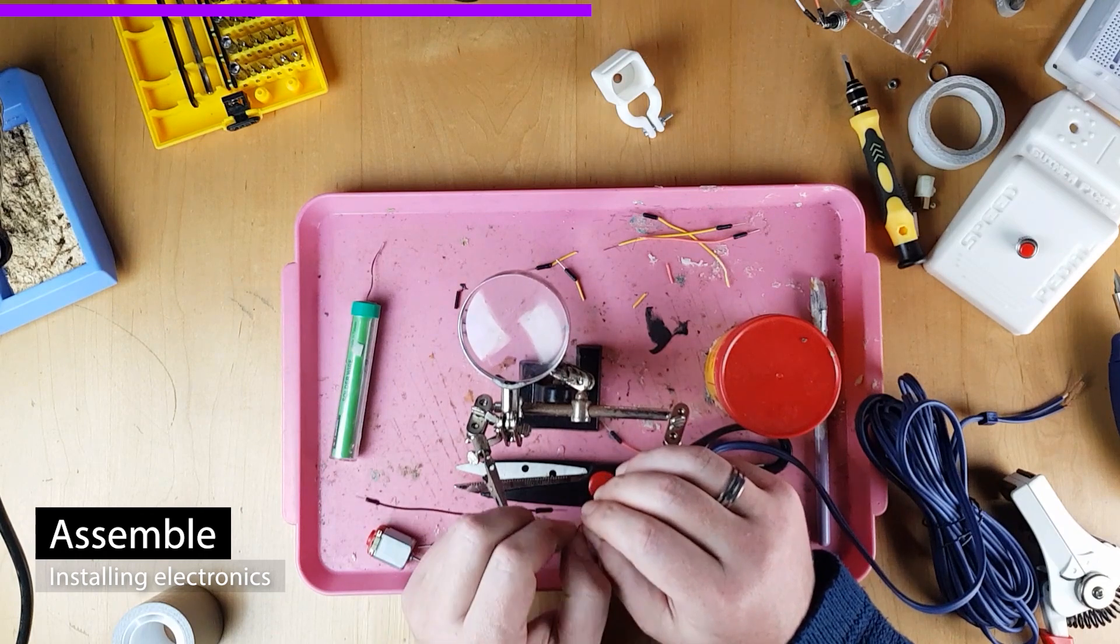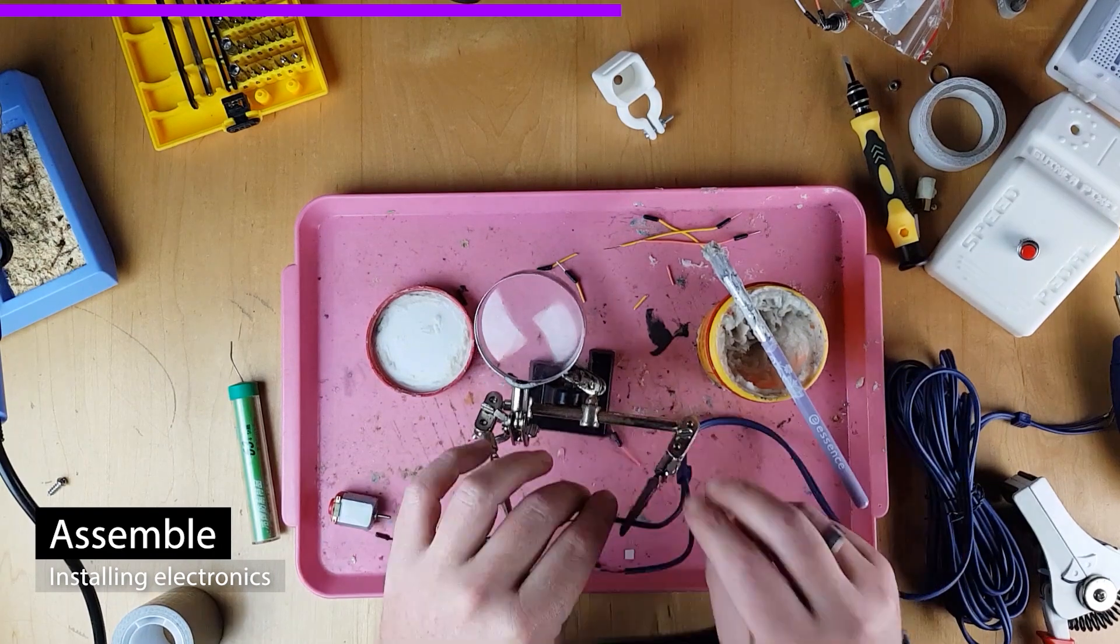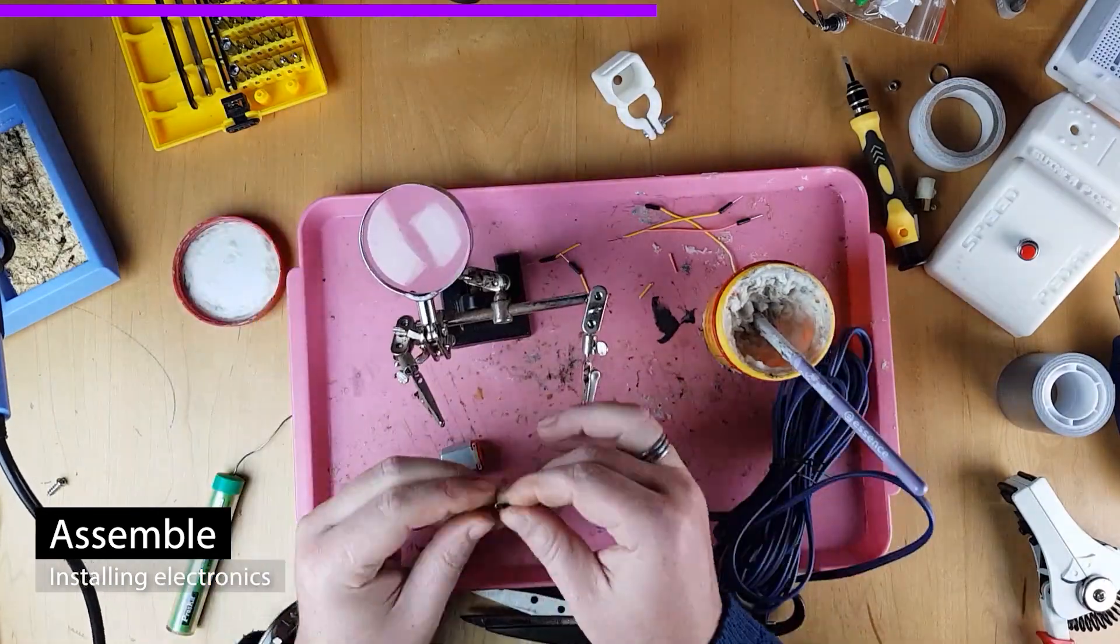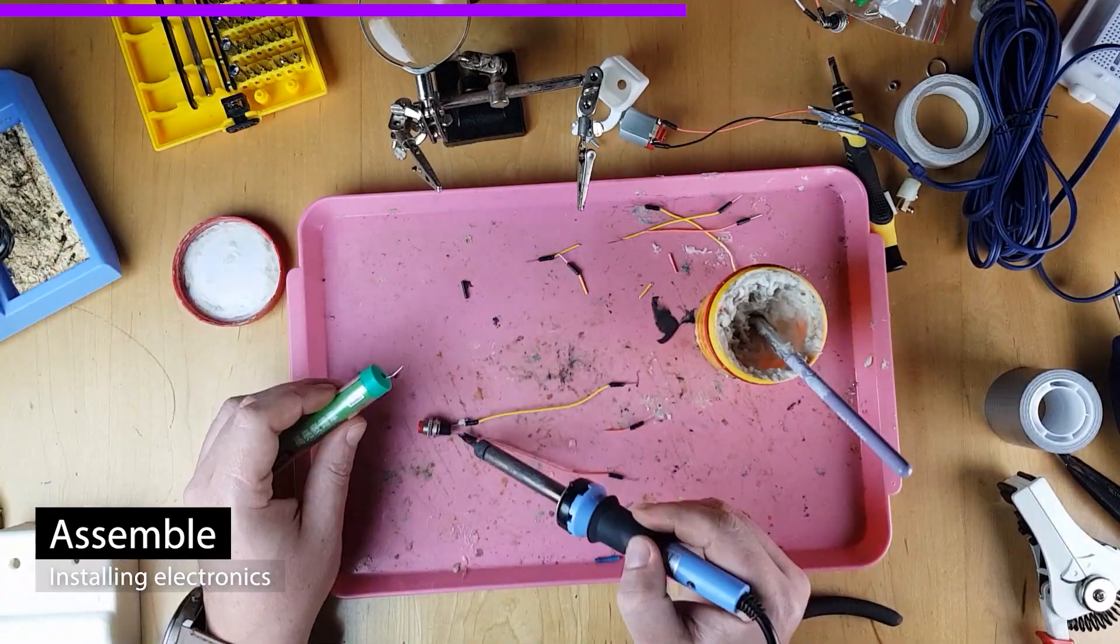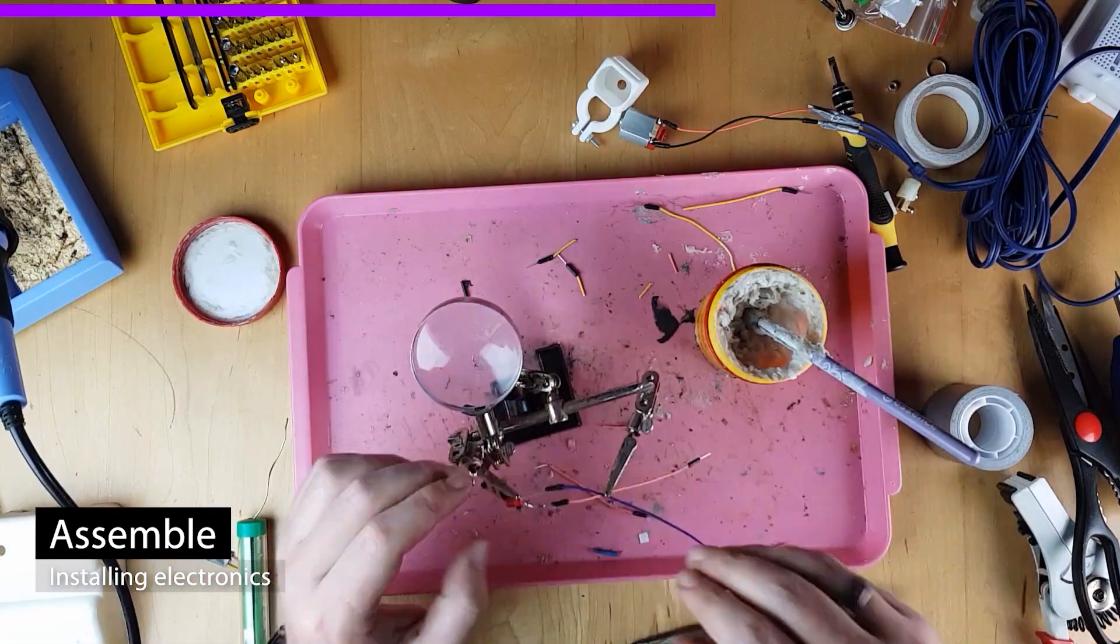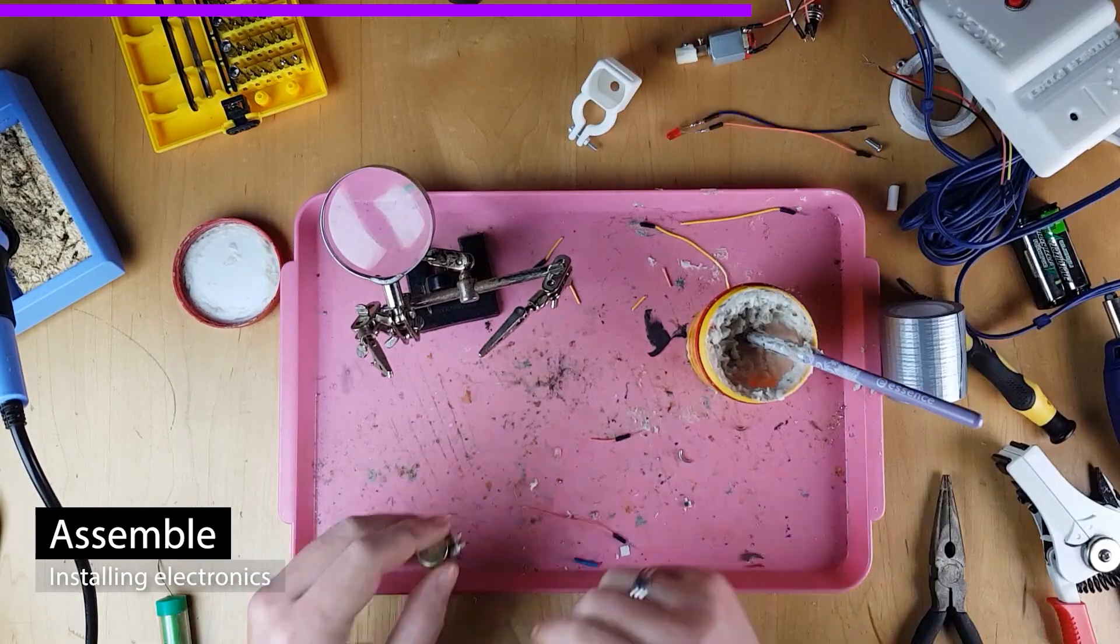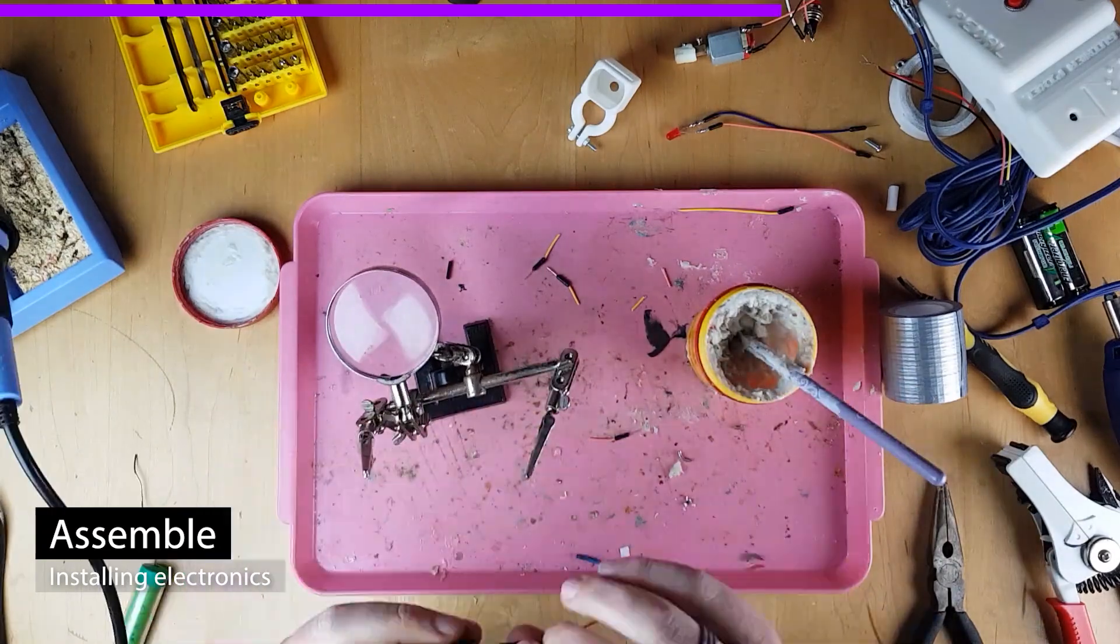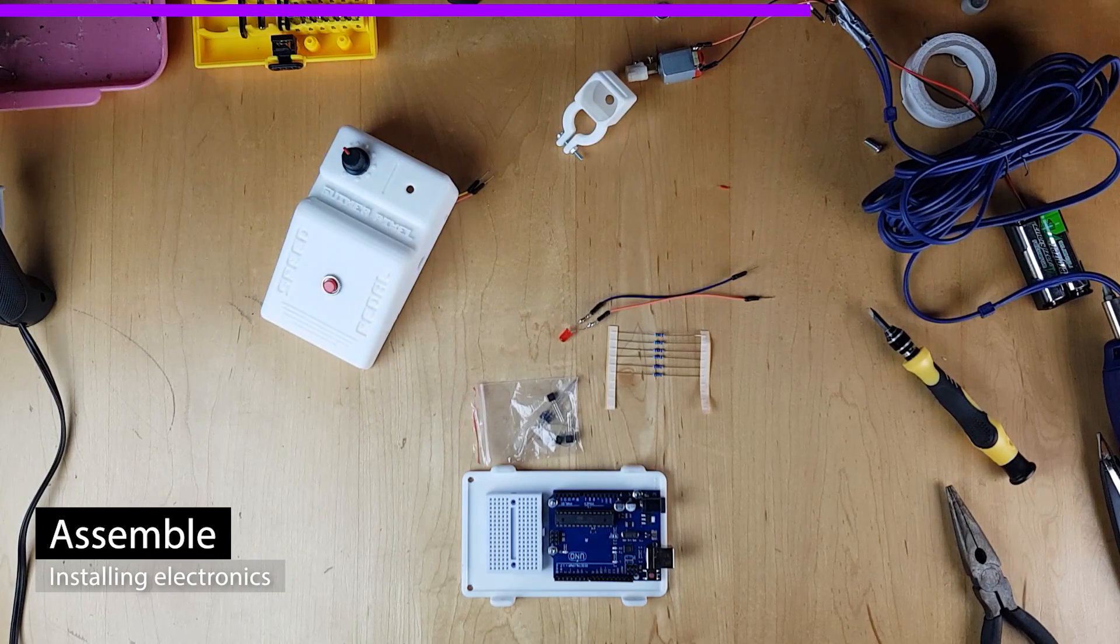I am soldering all the components that are housed in the top section of the pedal. If you don't have a soldering machine, you can try and tape or glue things together, but it won't be as reliable as soldering. Remember, you will probably be stomping on the pedal when in use. Use a glue gun to ensure all top housed components will stay in place.